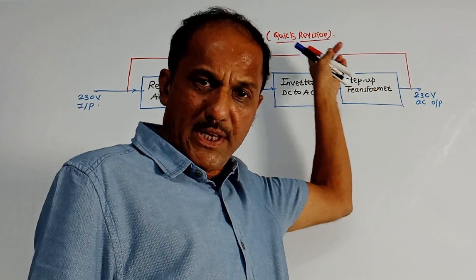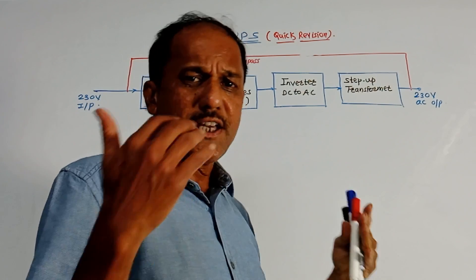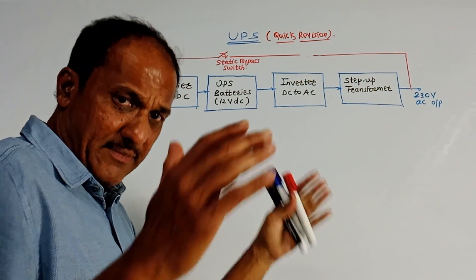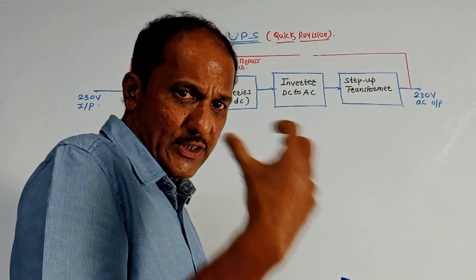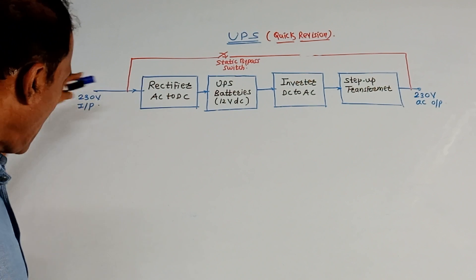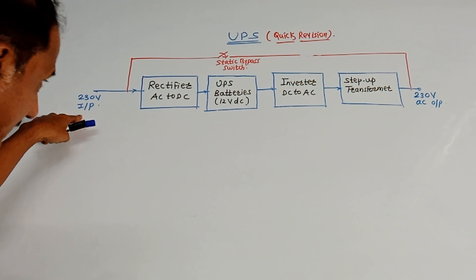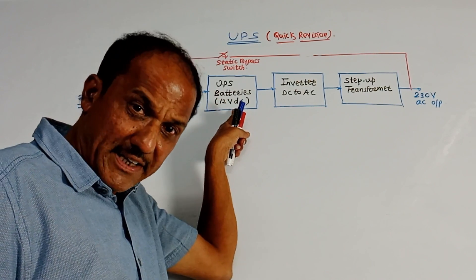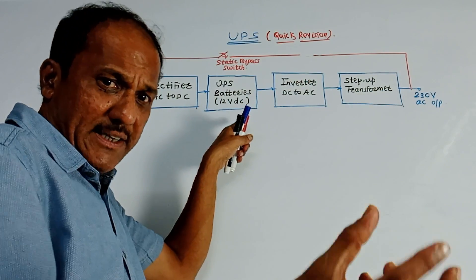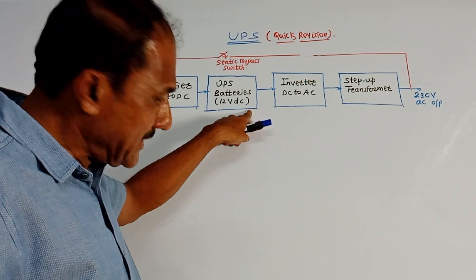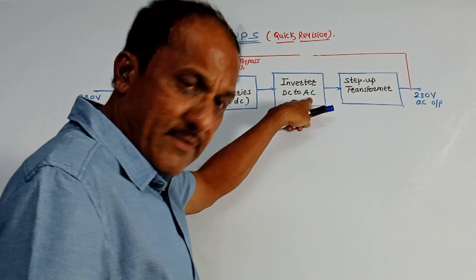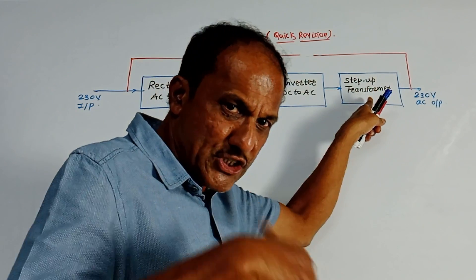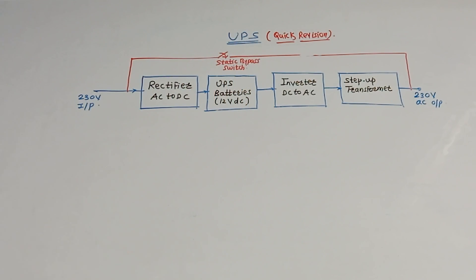Next is a quick revision of UPS — uninterruptible power supply. Whenever AC mains fails, the UPS provides a continuous supply to the appliance. This is the block diagram: at the input side, 230 volts AC is applied. The first block is a rectifier which converts AC to DC. Then UPS batteries — a string of batteries connected in series — provide DC output. An inverter converts DC back to AC, and the output is given to a step-up transformer which generates 230 volt regulated AC output.